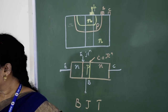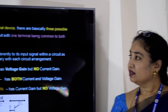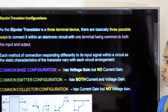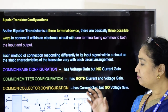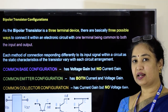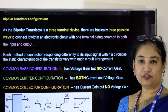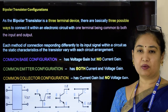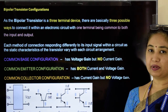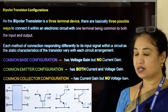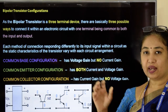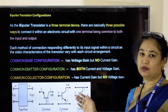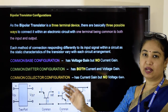This transistor is a three-terminal device. We take the transistor and connect it in different modes: common base mode, common emitter mode, and common collector mode. We achieve this by making any one terminal common to both the input and the output sections.